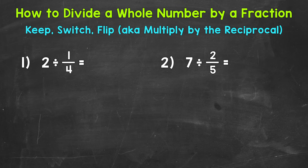Let's jump into number one where we have two divided by one fourth. We can think of this as how many one fourths are in two, or how many one fourths can we make out of two. We are dividing two by one fourth. Let's rewrite our problem using keep, switch, flip — also known as multiplying by the reciprocal.